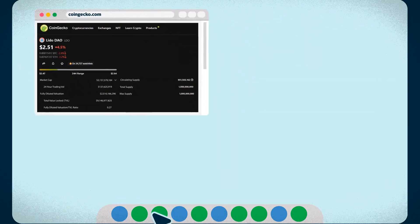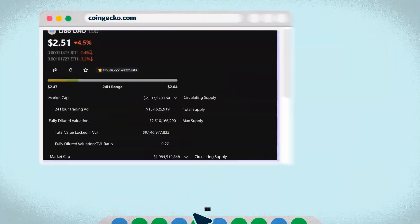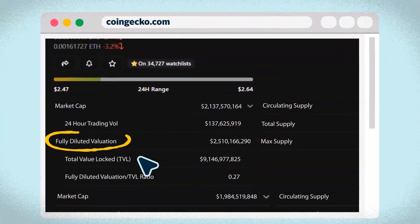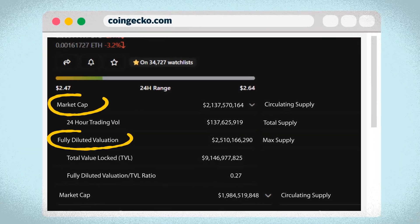When you're checking out coins on sites like CoinGecko, Gecko Terminal, or even Token Terminal, you're bound to come across two numbers called Fully Diluted Valuation (FDV) and Market Capitalization (Market Cap).